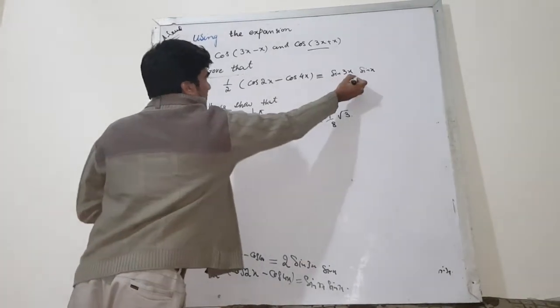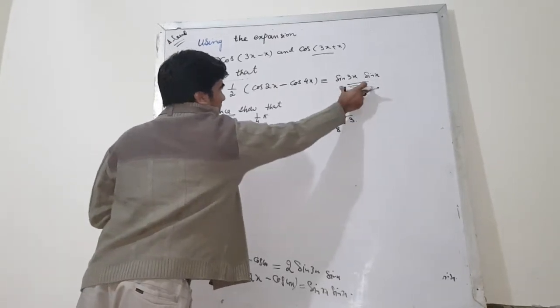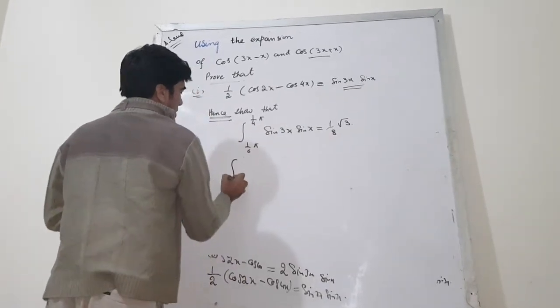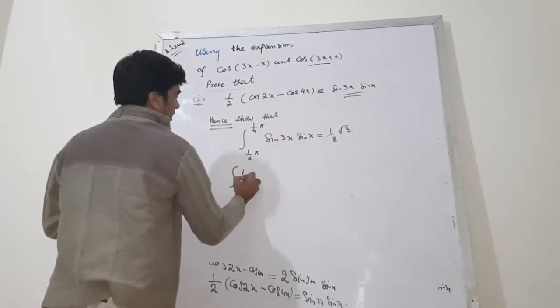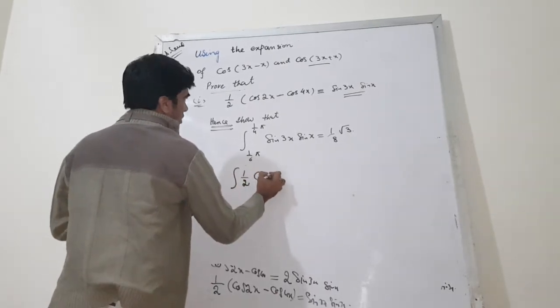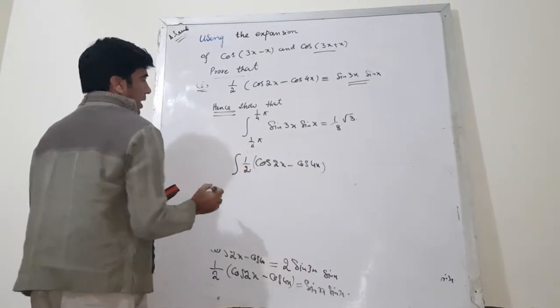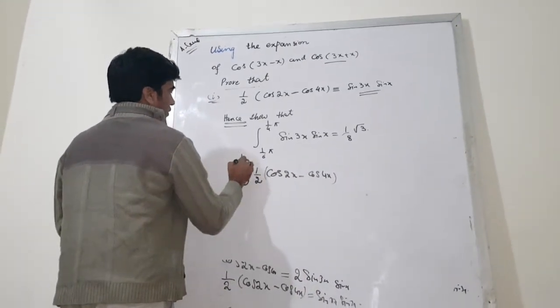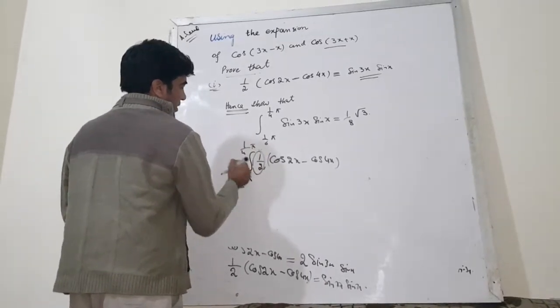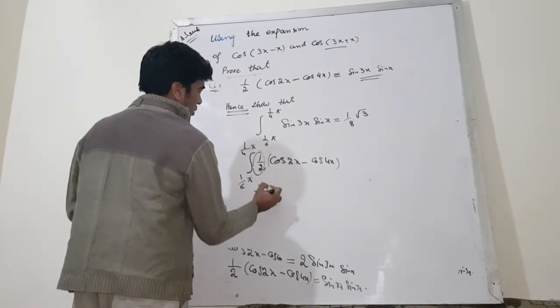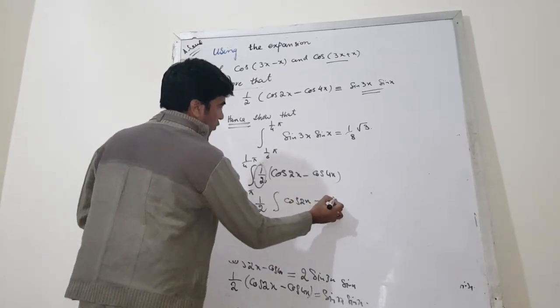Look, you already have noticed that sin 3x sin x and he is asking you, find the integral of this. So, instead of this sin 3x sin x, you can write this 1 over 2, cos 2x minus cos 4x, pi over 4 and pi over 6. Now, as this is the constant term, this can be written outside of the integral, cos 2x minus cos 4x.